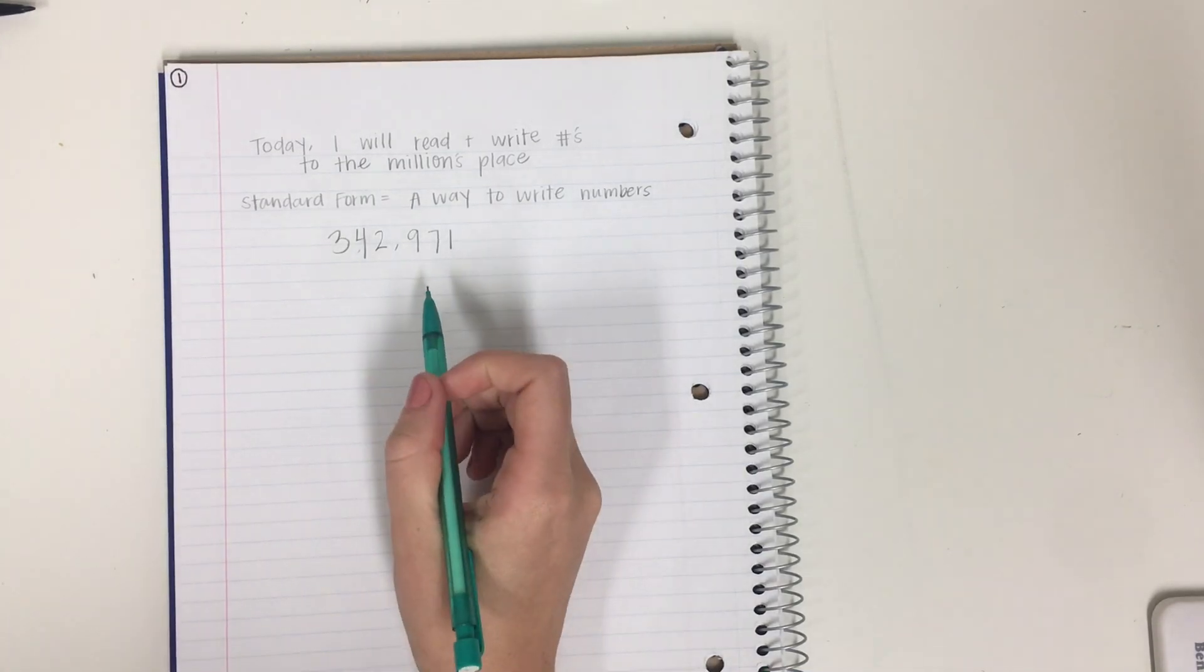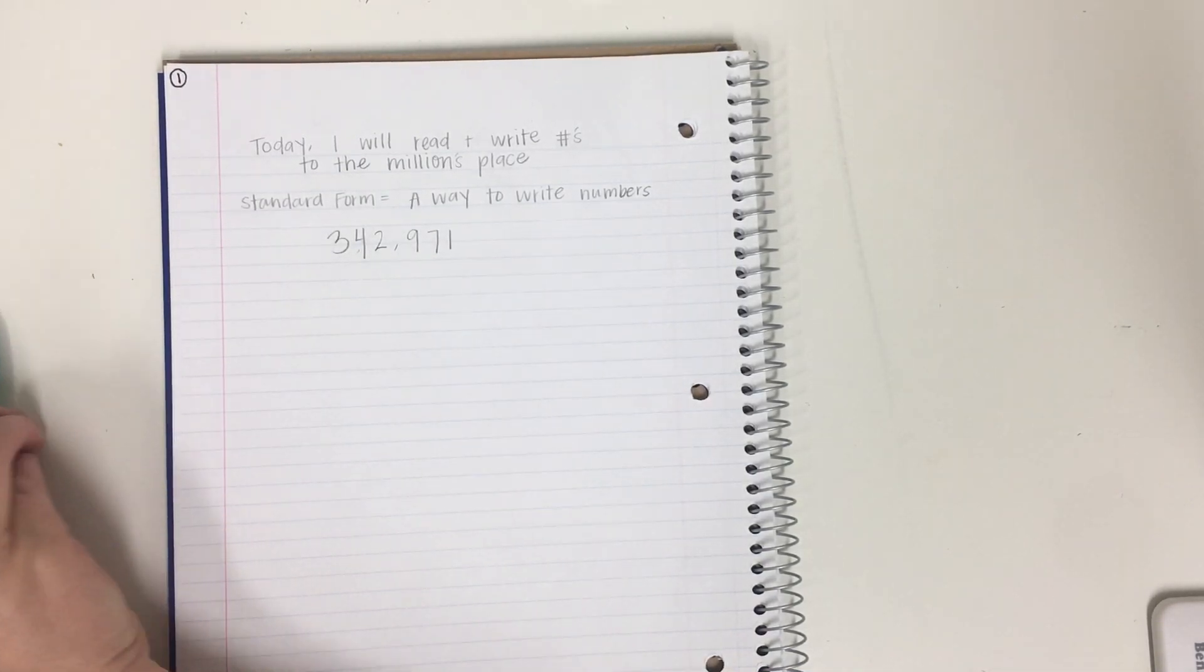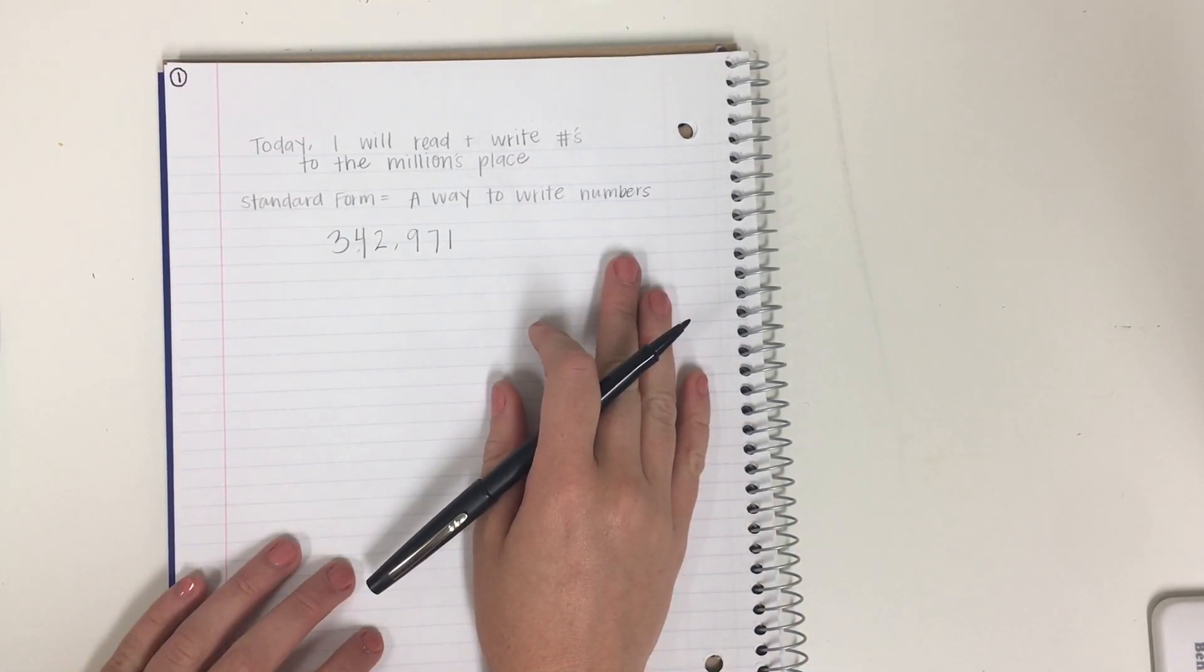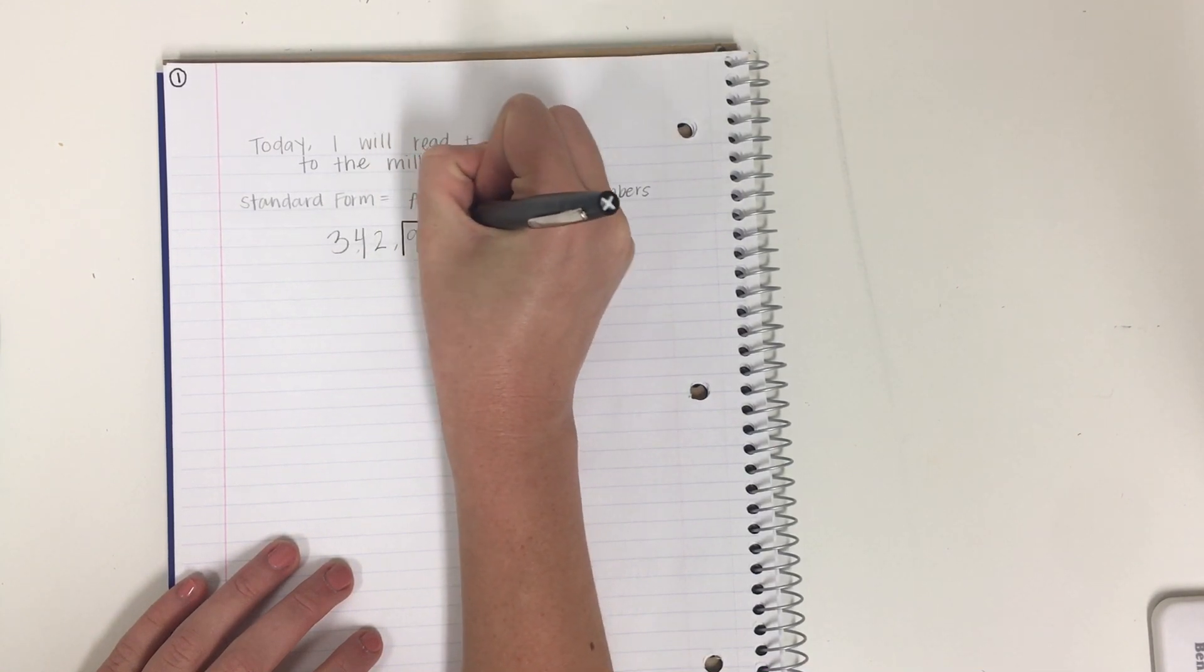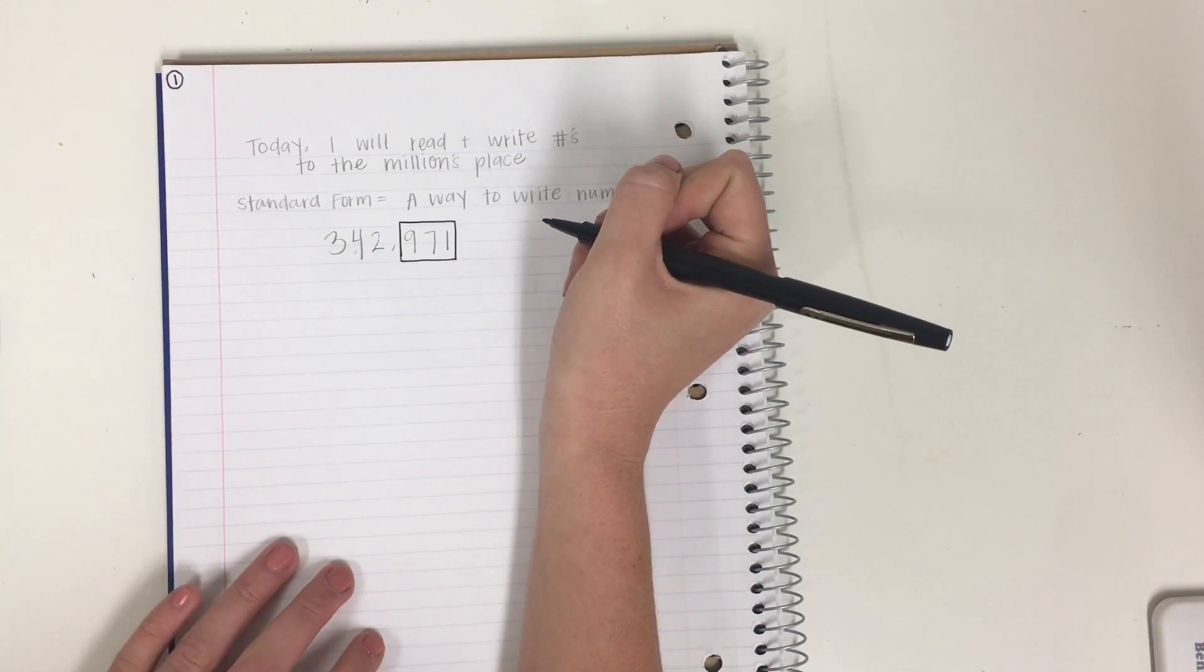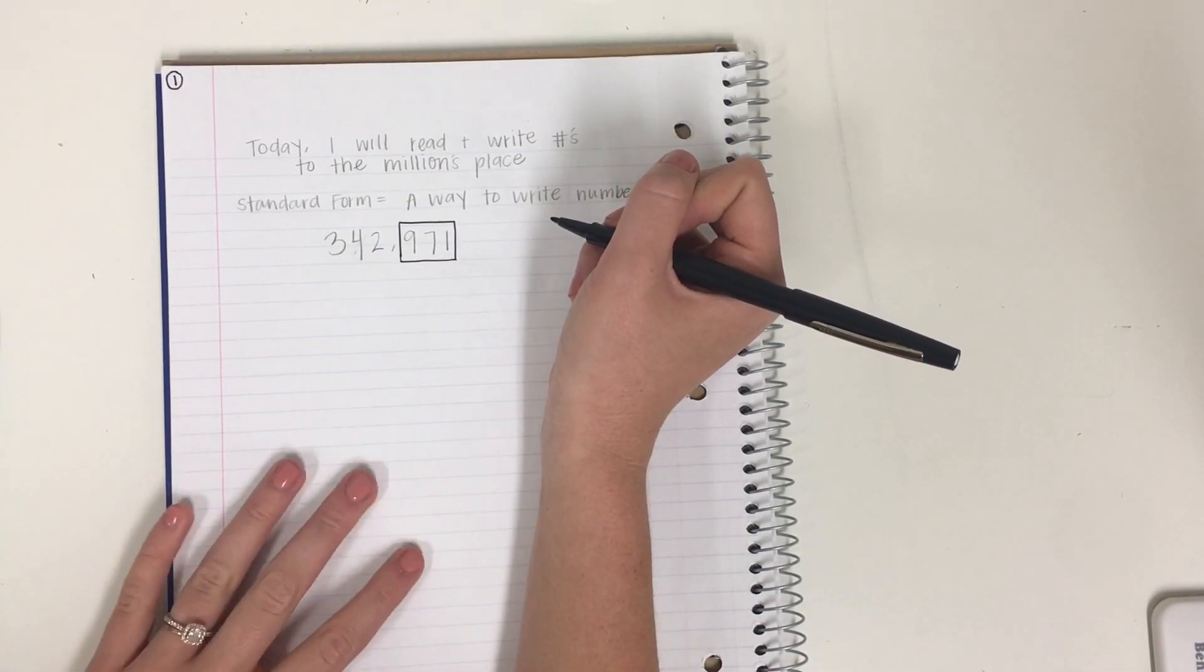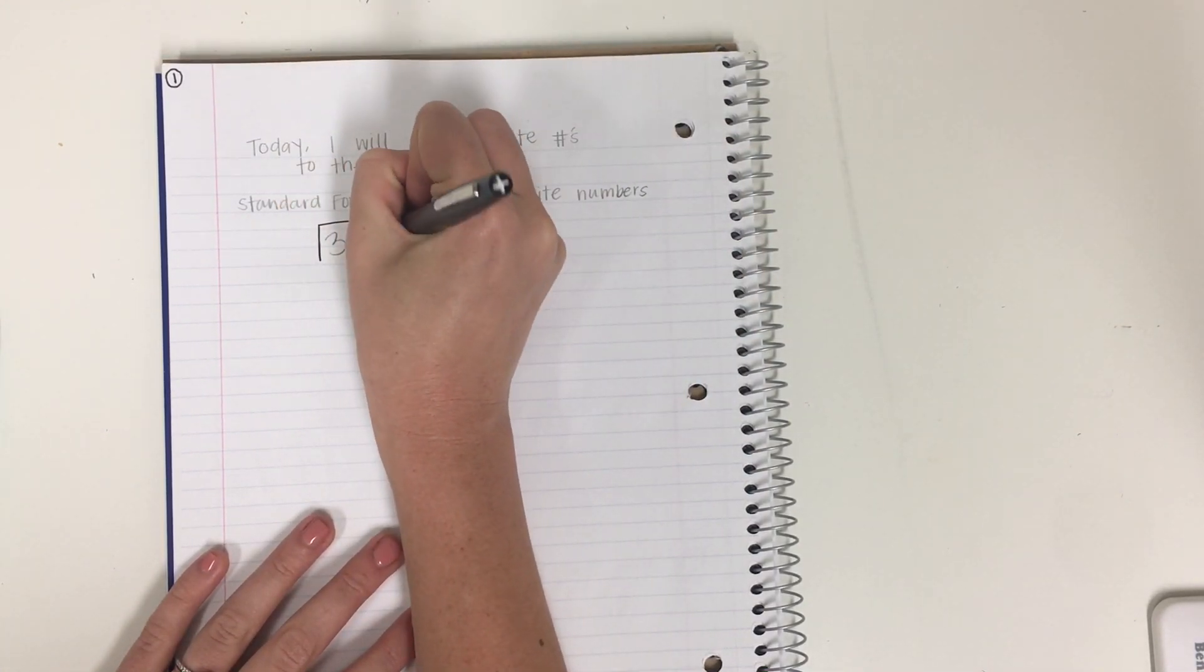Now sometimes it can get tricky to read a larger number, so I want to show you a trick. So I want you to take a different color pen or pencil out and I want you to put a box around this number. Now, when you look at a big number, sometimes it can be overwhelming and it can be a little tricky. But using this box method, it will help you to read it correctly.